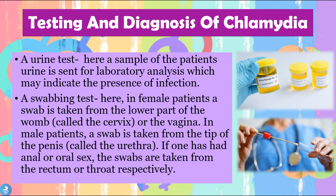Now let's talk about testing and diagnosis of chlamydia. The first method is a urine test, where a sample of the patient's urine is sent for laboratory analysis, which may indicate the presence of the infection. From this urine sample, we test for the specific bacteria Chlamydia trachomatis and can determine whether the patient is positive or negative.